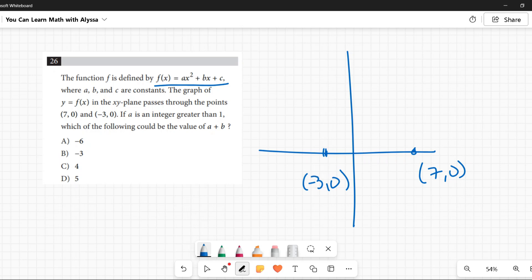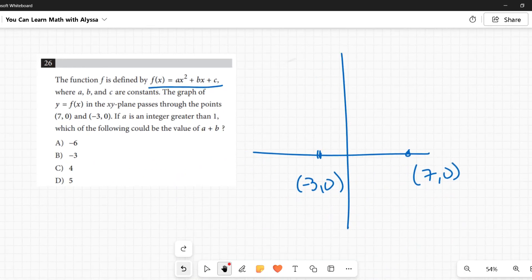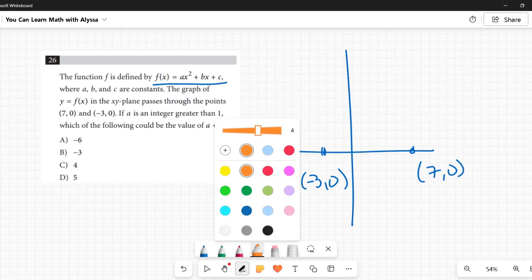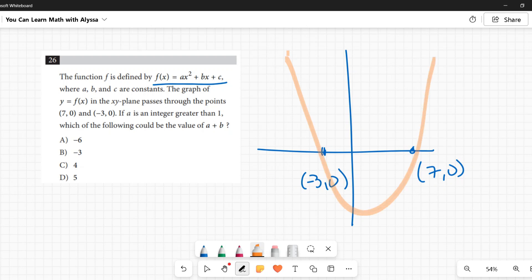So (-3,0) and (7,0)—the parabola passes through them. So this parabola could be going up and coming down, or it could be going down and coming up, either way, but it's going through these two points. These are its x-intercepts.